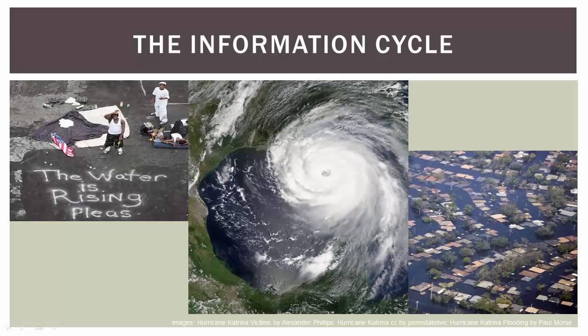As months passed, academics began to write about what happened in New Orleans. Academic journals published articles relevant to their different disciplines, such as the roles that race and poverty played in the tragedy, the engineering difficulties in levee construction, and how local and federal governments manage natural disasters.